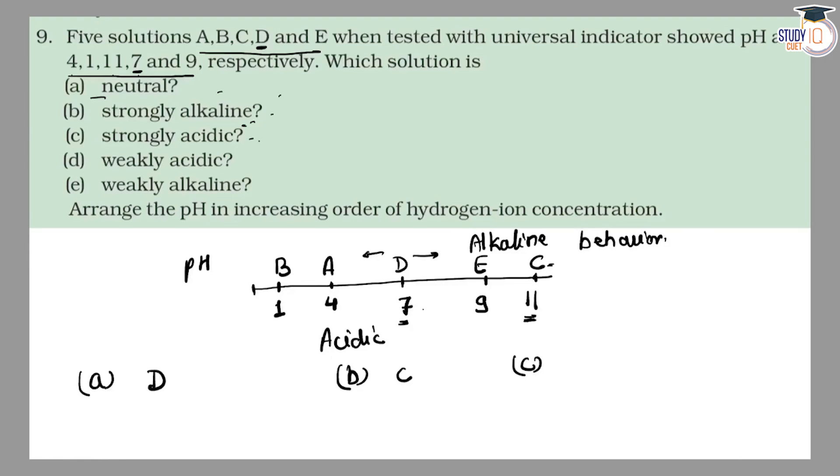Next, part C. Strongly acidic means very small pH will be. This will be 1, which means solution B.